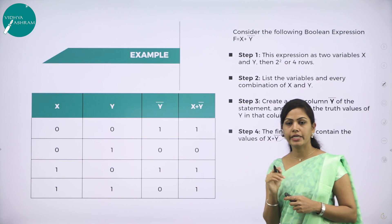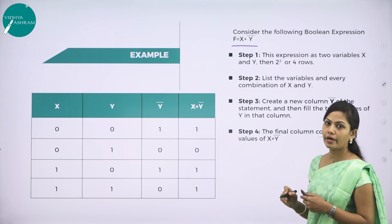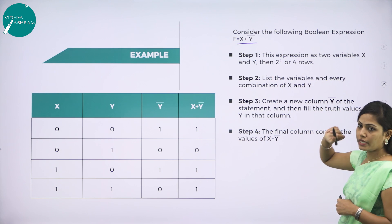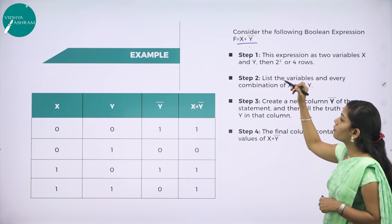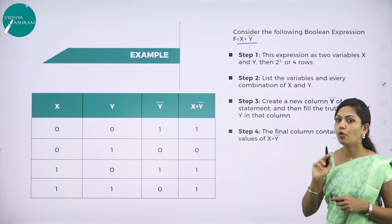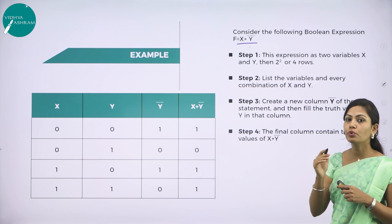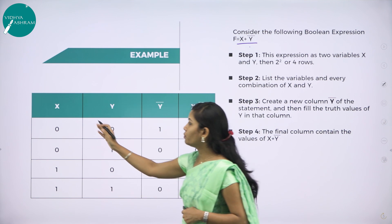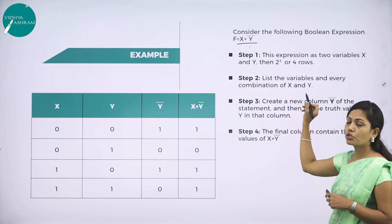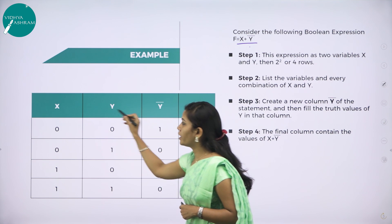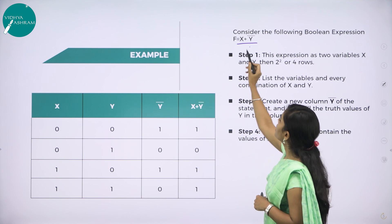I will give one example for writing the truth table. Consider the Boolean expression f = x + y-bar. Step 1: This expression has two variables, x and y, so we use 2 power 2, which gives 4 rows. Step 2: List the variables and every combination of x and y — we have columns for x, y, y-bar, and x plus y-bar. Step 3: Create a new column for y-bar and fill the truth values. The combinations for x and y are: (0,0), (0,1), (1,0), (1,1).